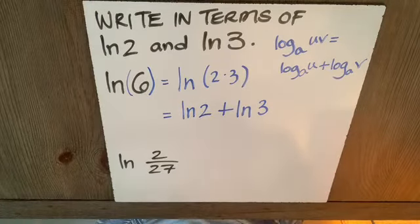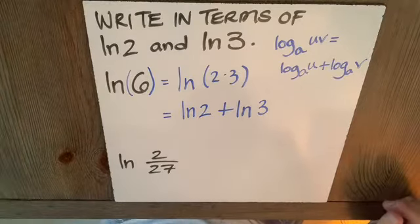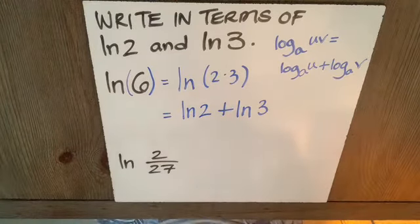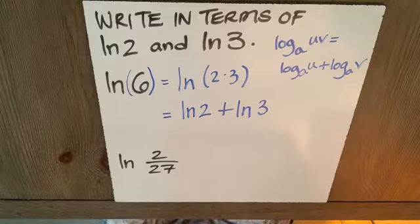I know that's a little unsatisfying, but we have done it. We have answered the question. Here, a little more difficult. Natural log of 2 over 27.